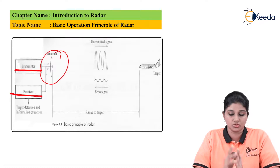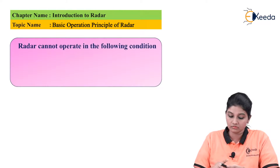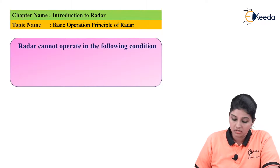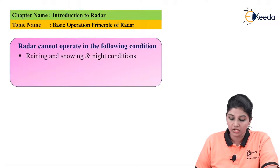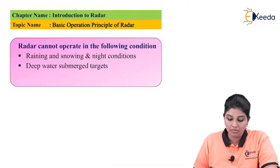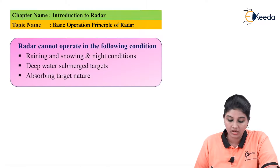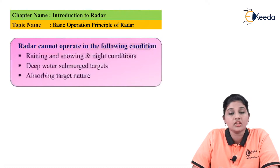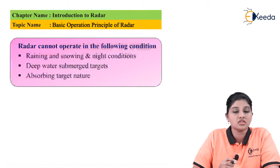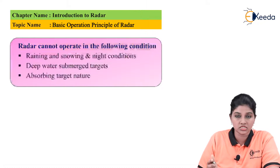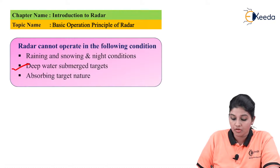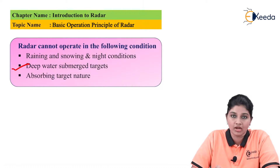Now let's move on to some MCQs. The first question: the radar cannot operate in which of the following conditions? Options are: raining, snowing, and night condition; deep water submerged targets; or absorbing target temperatures. Since radar can operate in all weather conditions but cannot penetrate deep water, the correct answer is option B — deep water submerged targets. We cannot use radar in underwater applications.